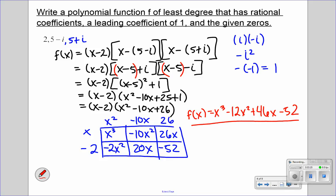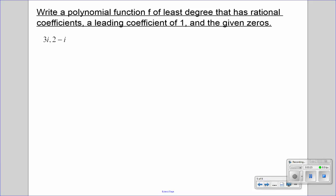So let's do another example. Now I have 3i and 2 minus i. Even though we just have two of these, they're both imaginary numbers and we have to use the conjugates for both. The conjugate of positive 3i is negative 3i, and the conjugate of 2 minus i is 2 plus i. So we have four zeros total.